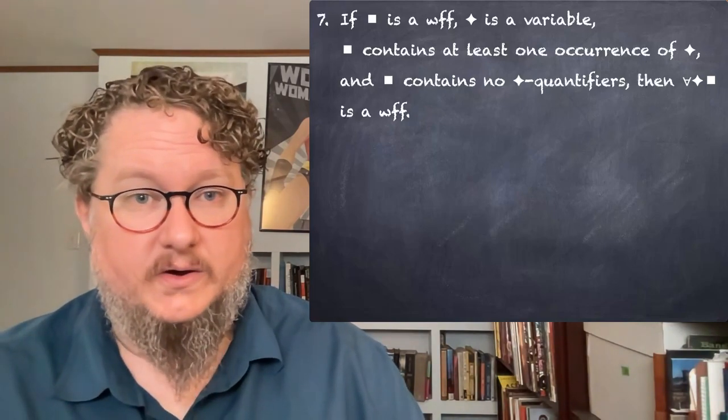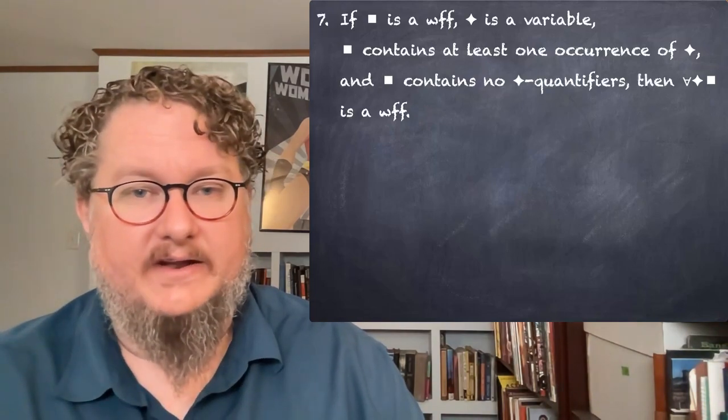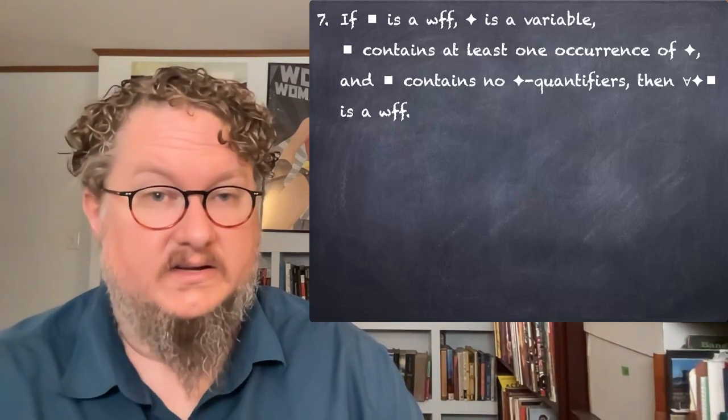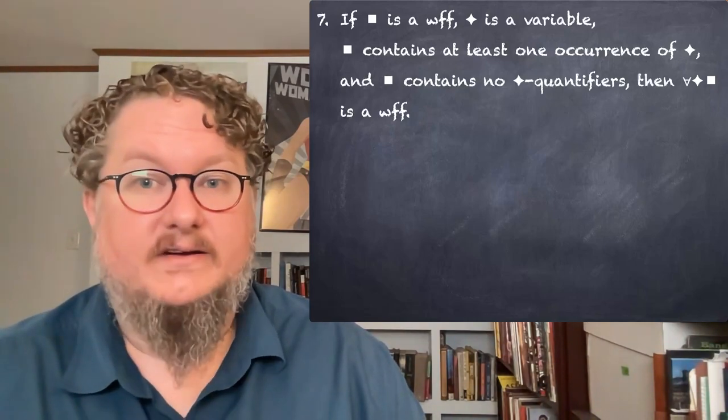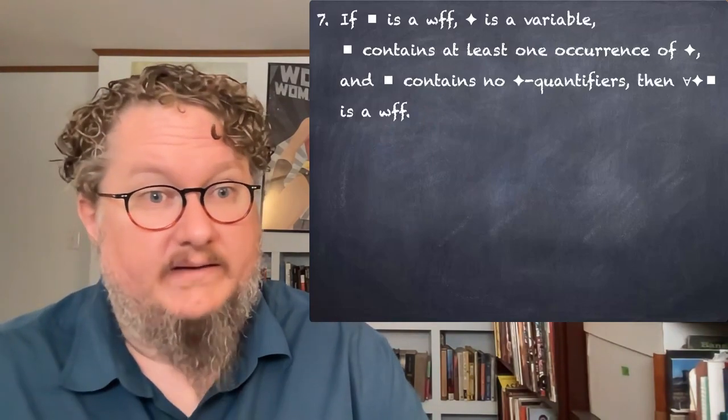Then for all star square is a wff. So if you have a wff that has an x in it, and no quantifier applying to x yet, if you then add for all x in front of that wff, you also have a wff.